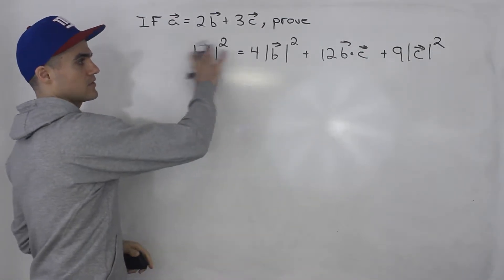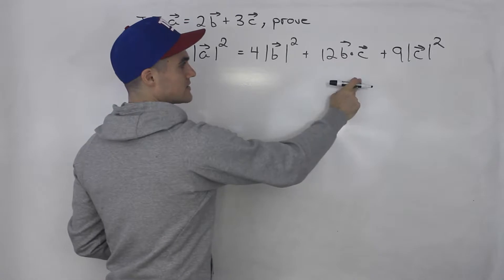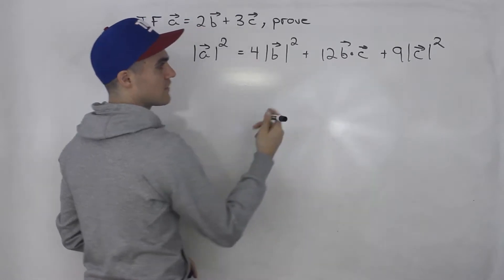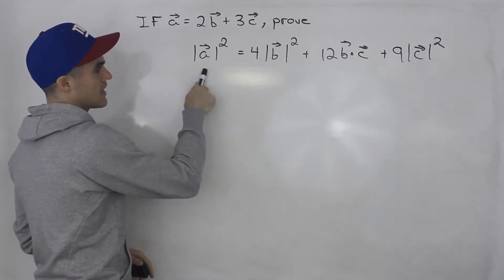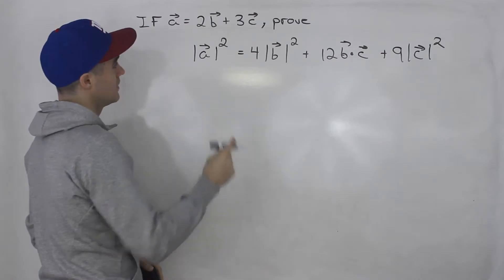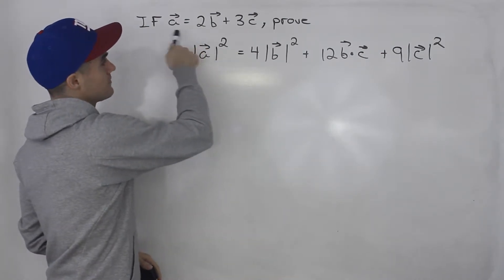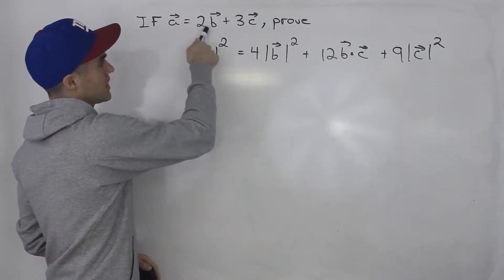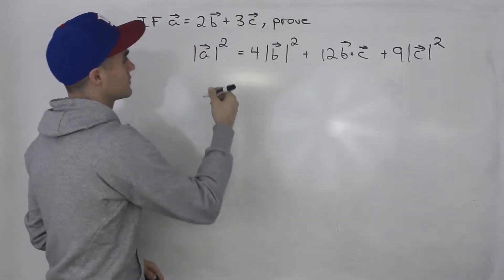Notice that with this equation here, the right side is in terms of vectors b and c, but this left side is in terms of vector a. But we're told that vector a is 2 times vector b plus 3 times vector c.